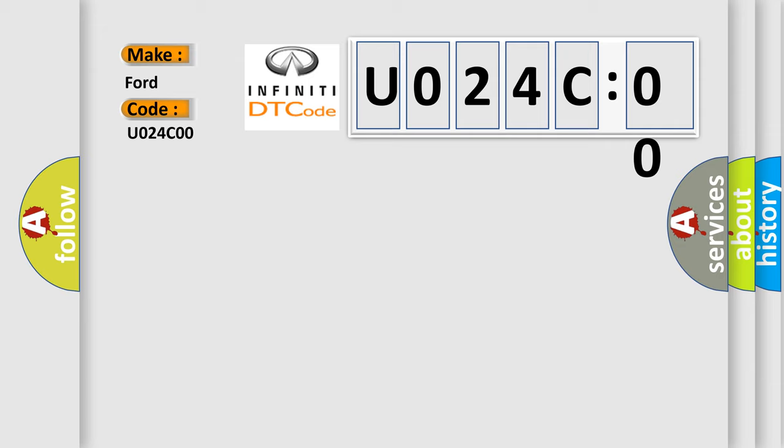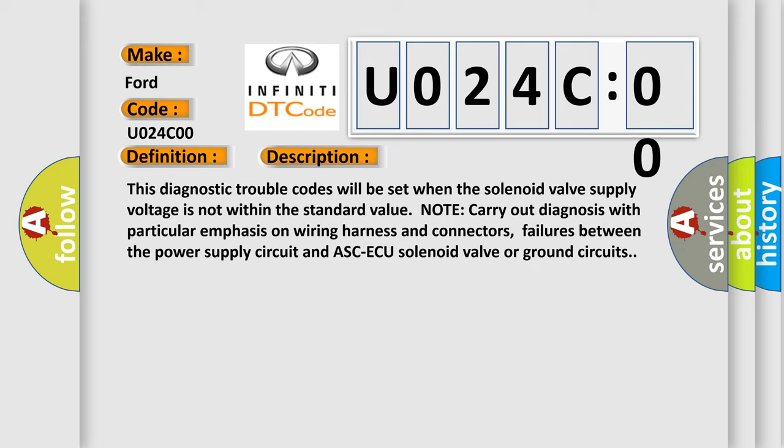The basic definition is Faulty valve power supply circuit. This diagnostic trouble code will be set when the solenoid valve supply voltage is not within the standard value. Note: carry out diagnosis with particular emphasis on wiring harness and connectors. Failures between the power supply circuit and ASCACU solenoid valve or ground circuits.